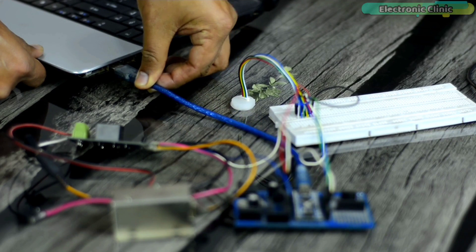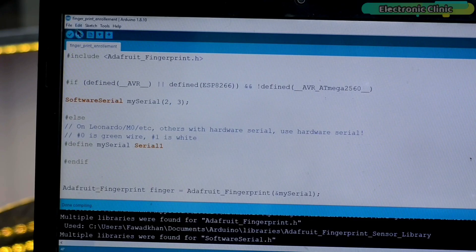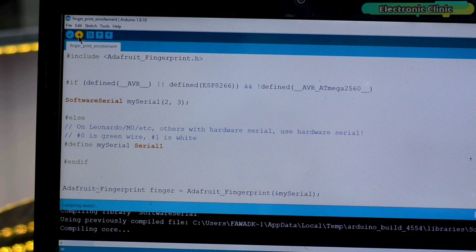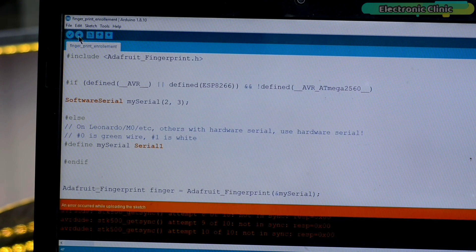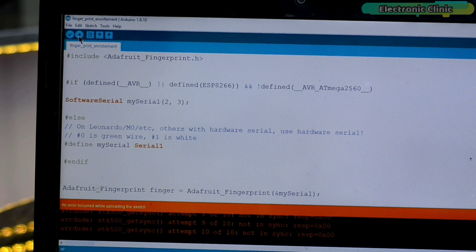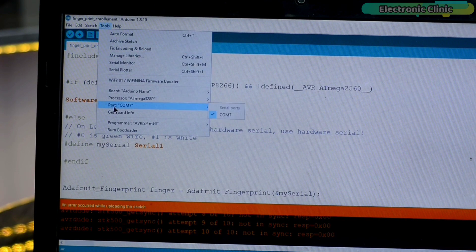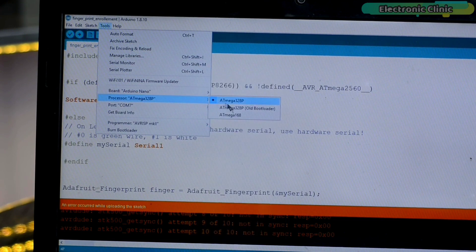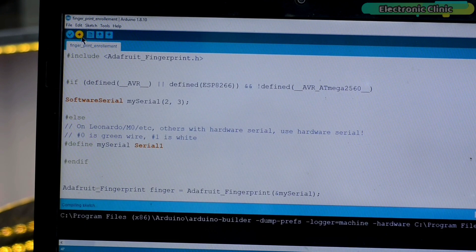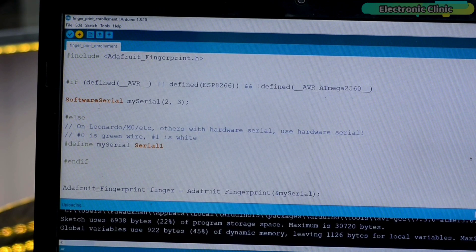Next, for the fingerprint enrollment, connect your Arduino board with a laptop or PC and upload the sketch. You can download this code from our website electronicclinic.com. I will provide a link in the description. You can see the code has been uploaded.